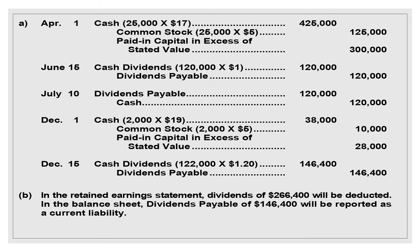July 10, date of payment: Dividends Payable is debited $120,000 and Cash is credited $120,000.